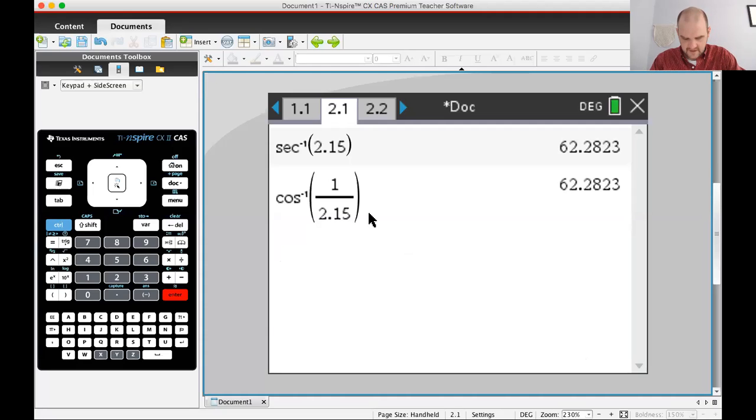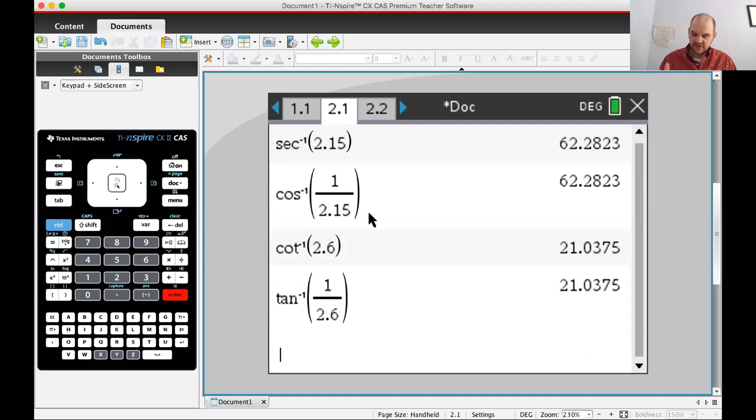So here, I want to do the inverse cotangent of 2.6. Okay, 21.038. So approximately, wrong color. You didn't even see it, but still. 21.038. 21.038 degrees. Okay, what else could we do? Well, if cotangent is 2.6, then tangent is 1 over 2.6. So I think I can do the inverse tangent of 1 over 2.6, and I get the same thing. So you're going to get the same thing when you do these cosecants.